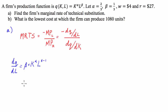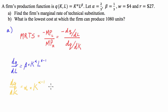Now let's do exactly the same but with respect to capital. So dQ/dK is going to equal alpha times K to the alpha minus 1, times L to the beta.